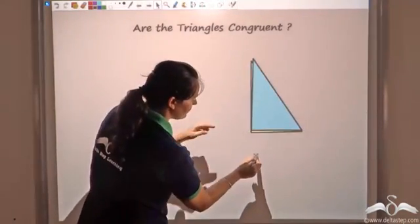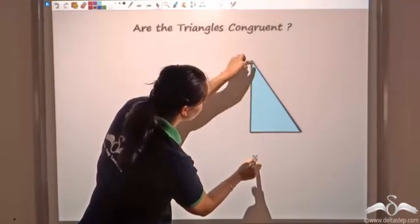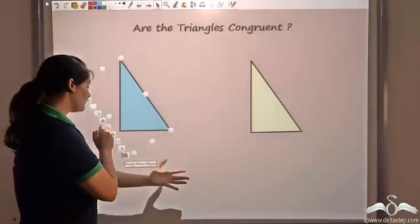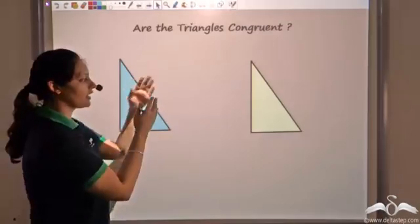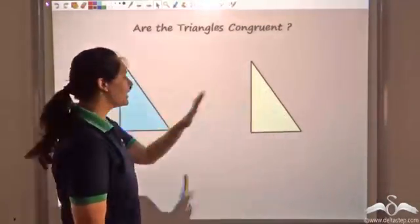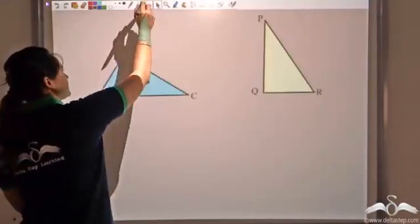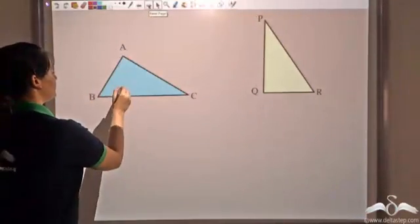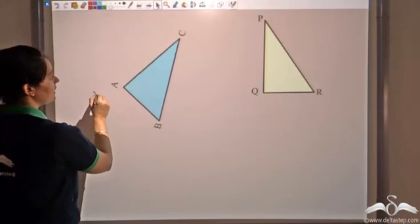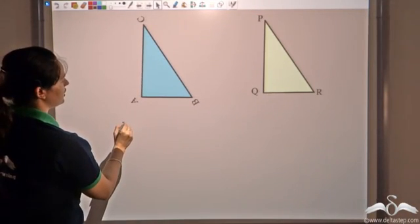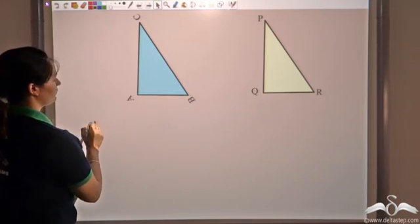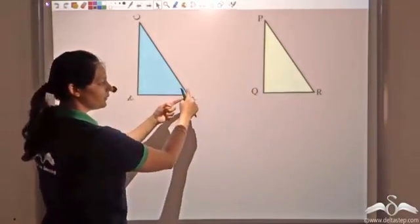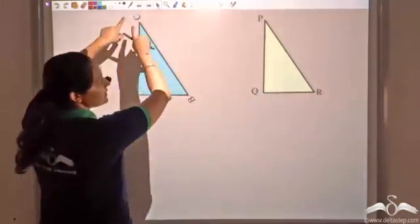When I perfectly overlap them, I see that the sides also overlap and with these sides the angles are also overlapping. To see which sides overlap which side of the other triangle, and which angles of this triangle overlap with the angles of the other triangle, let me first name these triangles. I name these triangles as triangle ABC and triangle PQR. Now let me rotate it such that ABC more or less looks like PQR. I see that vertex A corresponds to Q.